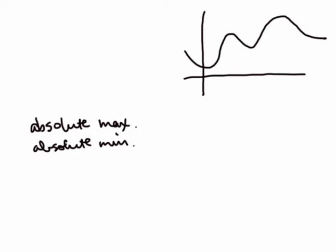So an absolute maximum, let me at least write this out once in full, and an absolute minimum. An absolute maximum is an x value where the function takes on its highest y value.